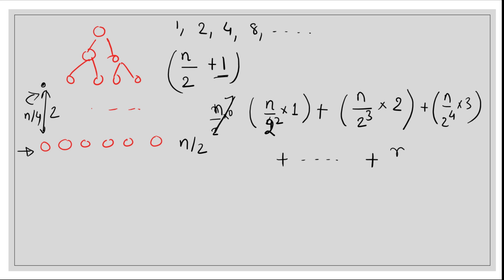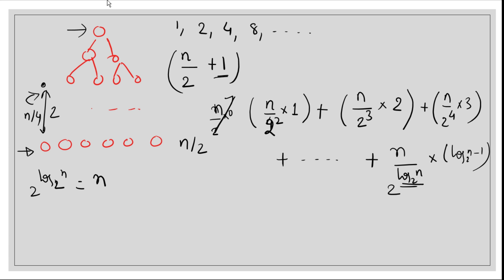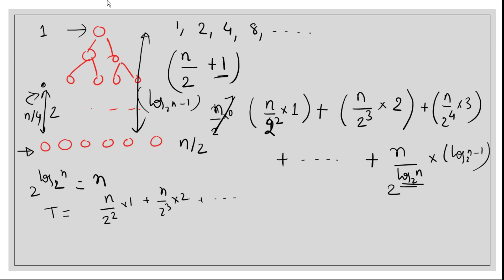Continuing this pattern, the total time T is the sum: (n/2²)×1 + (n/2³)×2 + (n/2⁴)×3, all the way up to the root node, which has 1 node and a distance from the leaf of log₂(n) − 1. We can also write (n/2)×0 for the leaf level, but that term is zero. So the complete time duration T = (n/4)×1 + (n/8)×2 + ... + (n/2^(log n))×(log n − 1).